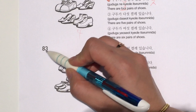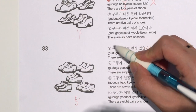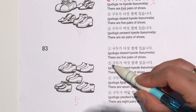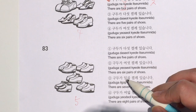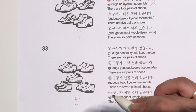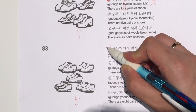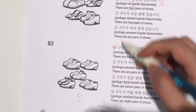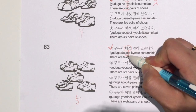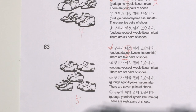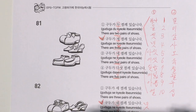Question 83. Here are five of them. Option 1: 구두가 다섯 켤레 있습니다. Option 2: 구두가 여섯 켤레 있습니다. Option 3: 구두가 일곱 켤레 있습니다. Option 4: 구두가 여덟 켤레 있습니다. Number one is the correct answer because 다섯 means five.